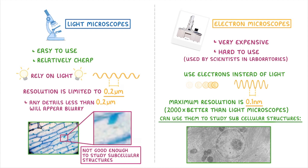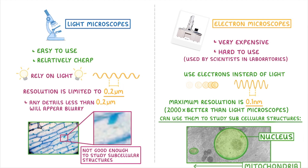For example, this image here, which is part of a pancreatic cell, was taken with an electron microscope, and we can see clearly the nucleus in the middle, and some mitochondria around the edge.